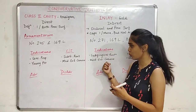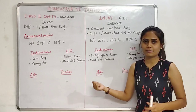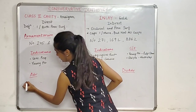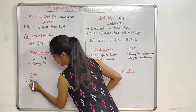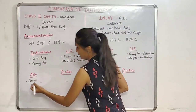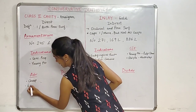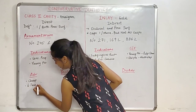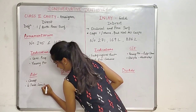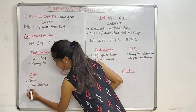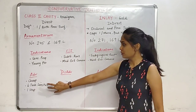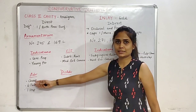Moving to advantages and disadvantages of both. For the Class 2 cavity for amalgam: first, it is very cheap and not expensive; second, it is less technique sensitive; and third, it is a single-step procedure. If you invert all these points, you get the disadvantages of the inlay cavity.